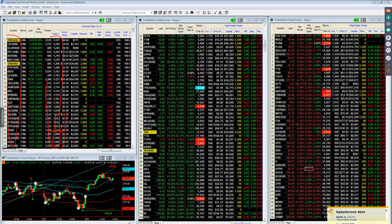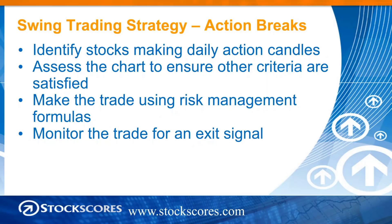Now I'm going to show you a less active swing trading strategy where we actually do our work in the evenings or in the final half an hour of the trading day. This strategy is called the action breaks strategy. It looks for stocks making action candles in stocks that have really been doing poorly lately, stocks that have been in downward trends. What I find is that stocks that break their downward trends with abnormal activity often reverse their trends and go into an upward trend. So we want to find stocks making daily action candles, then assess the chart to ensure some other criteria are satisfied, and then do our risk management. Capital preservation is our number one goal.